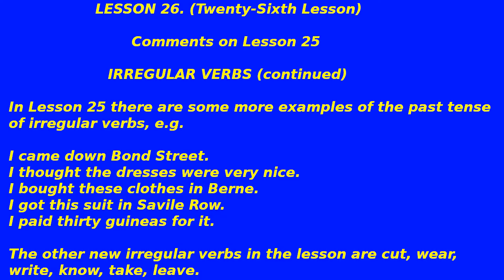Lesson 26. Comments on lesson 25: irregular verbs continued. In lesson 25 there are some more examples of the past tense of irregular verbs. For example: I came down Bond Street, I thought the dresses were very nice, I bought these clothes in Bern, I got this suit in Savile Row, I paid 30 guineas.